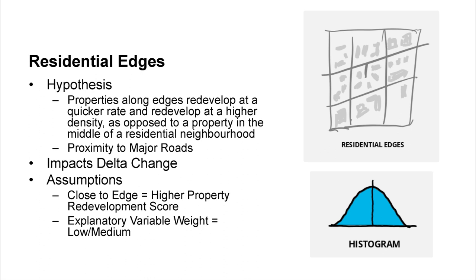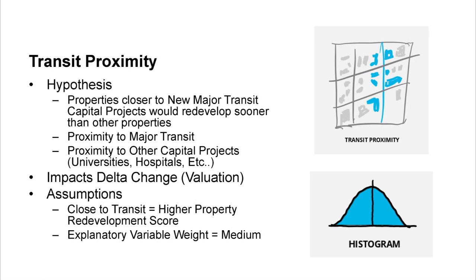Explanatory variable — residential edges: properties along the edge of residential neighborhoods closer to main roads tend to redevelop at a quicker rate and at higher density compared to properties in the middle of a neighborhood. You could go from a single-family house to combined single-family houses creating a row house at higher density. My assumption: if you're closer to the edge, you'd have a higher property redevelopment score. Probable weight: low to medium.